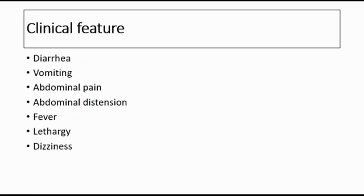The clinical features of AGE, acute gastroenteritis, include diarrhea and vomiting of acute onset. Diarrhea is defined as loose watery stools for three or more episodes, according to the WHO definition. Besides diarrhea and vomiting, children often present with abdominal pain and distension. The abdominal pain is usually generalized in nature, meaning the whole abdomen is painful.